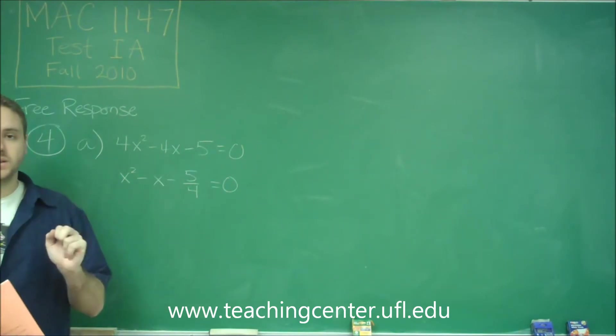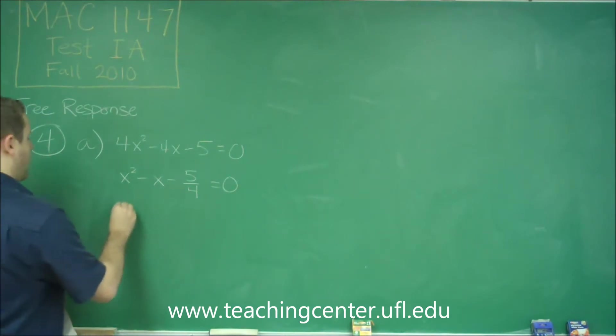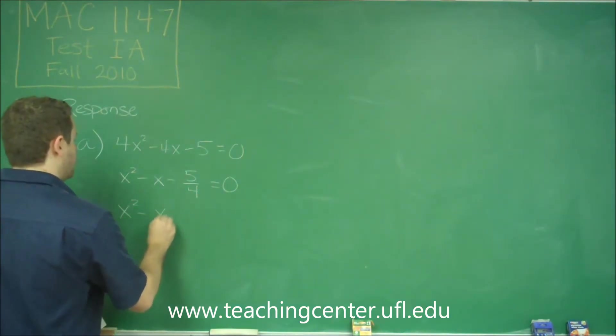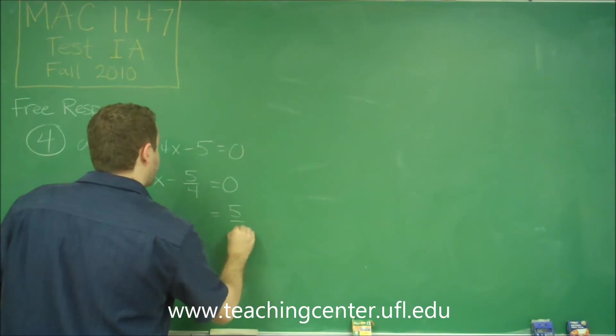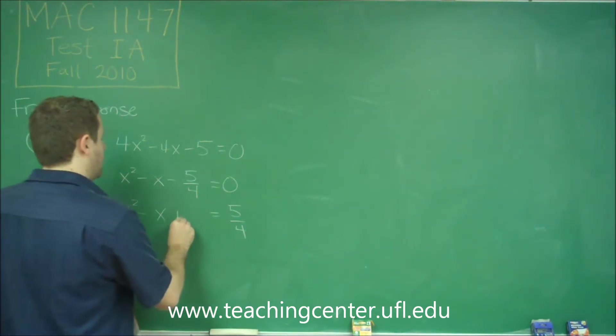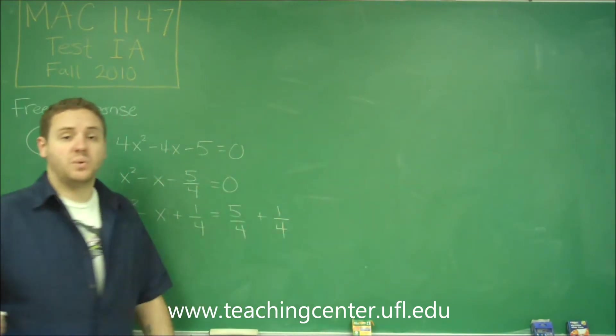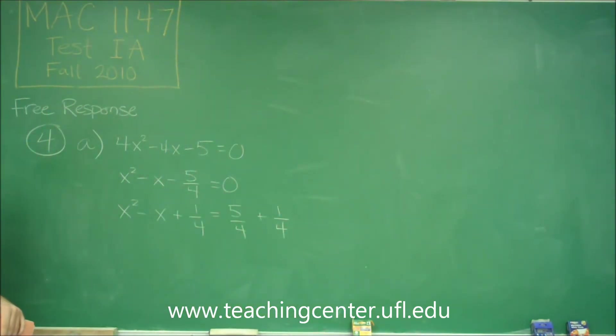Now our coefficient here is 1, we can deal with it. The last thing you always want to do with completing the square is move the constant to the other side, and you want to leave a space in your writing because you're going to be putting something there. So we add the 5/4 over. Now, the method for completing the square is you take half the coefficient that's on the x term. In this case that's -1, half of that would be -1/2. You square that and you add it to both sides. 1/2 squared is 1/4, so we add 1/4 to both sides of this equation.